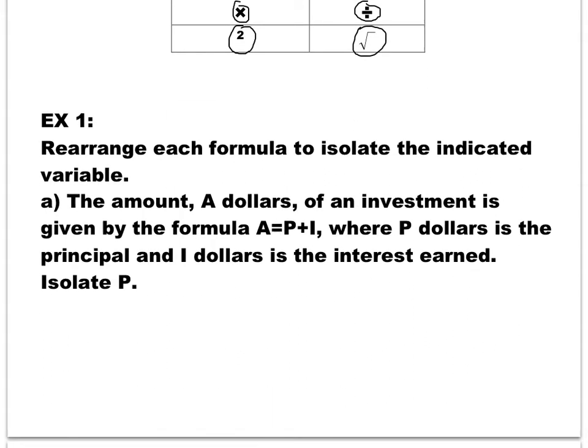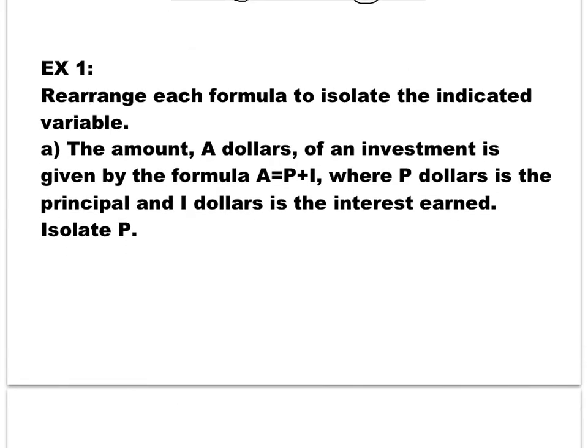The first example, I have the formula which I can find the amount of investment A in terms of initial investment P and the interest earned I. The question that I have to solve is isolating P, initial investment. We start with the original one which is A is equal to P plus I.